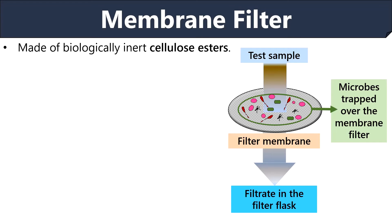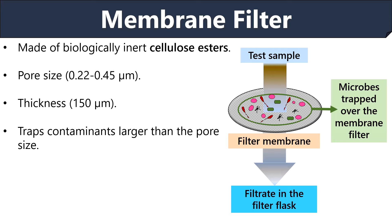Now let us take a quick overview of the membrane filter. Membrane filters are biological filters composed of cellulose esters. They have a uniform pore size ranging between 0.22 to 0.4 µm and a thickness of 150 µm. The membrane filter can trap microorganisms present in a 100 ml water sample. Therefore, the membrane filter acts as a barrier that separates contaminants from the water. Membrane filtration traps contaminants larger than the pore size on the surface of the membrane, so bacteria and other particulate matter are retained on the membrane filter surface.